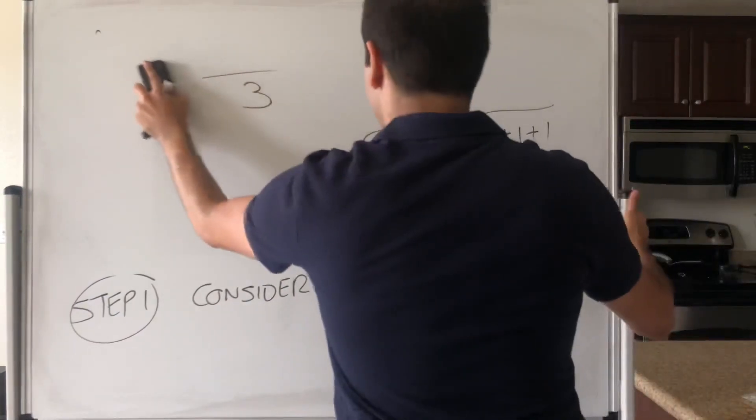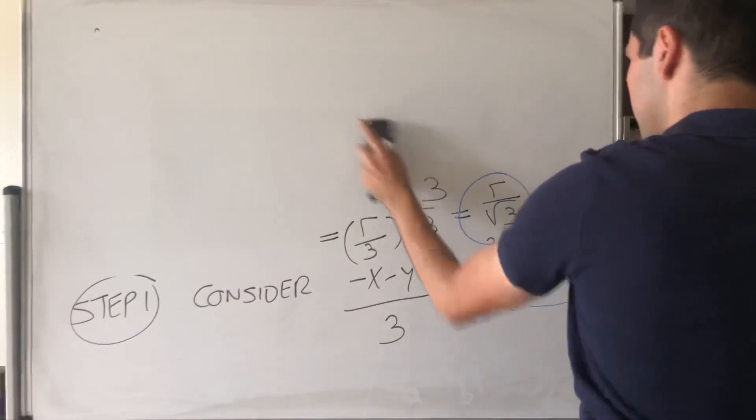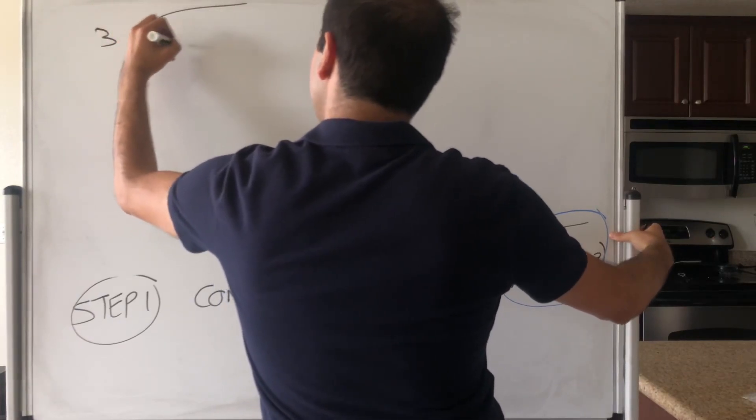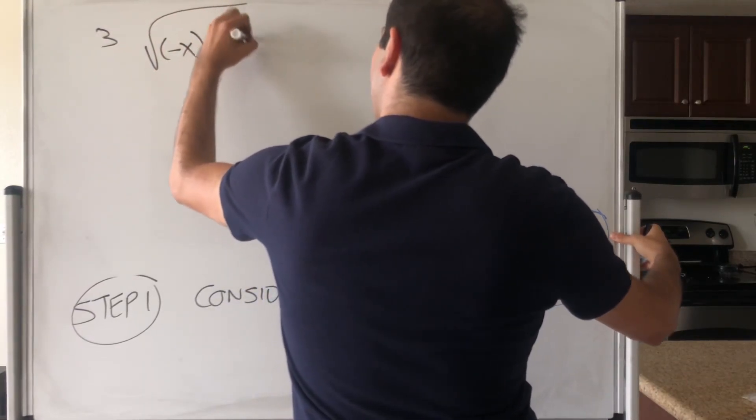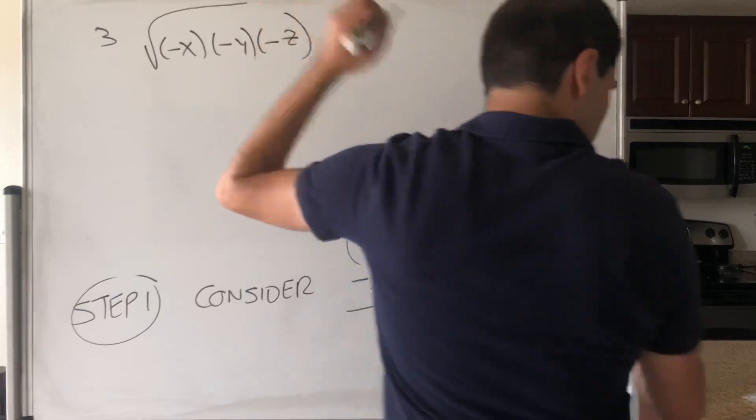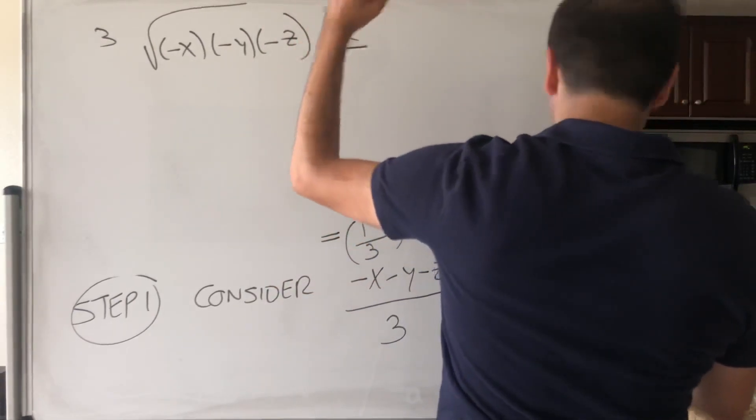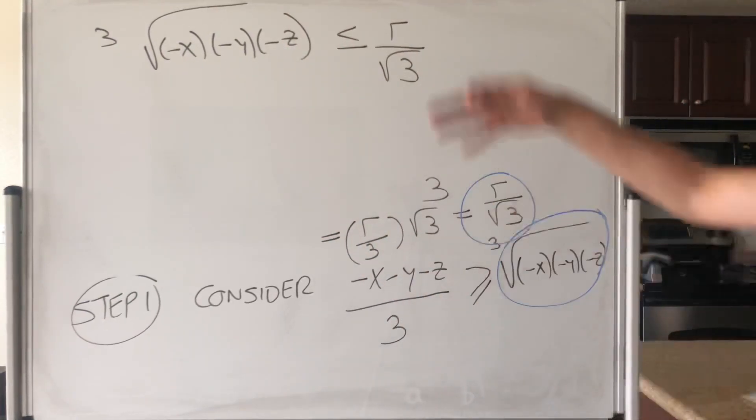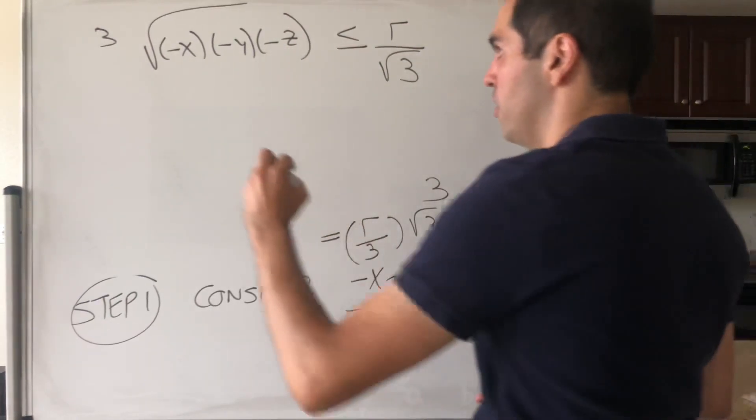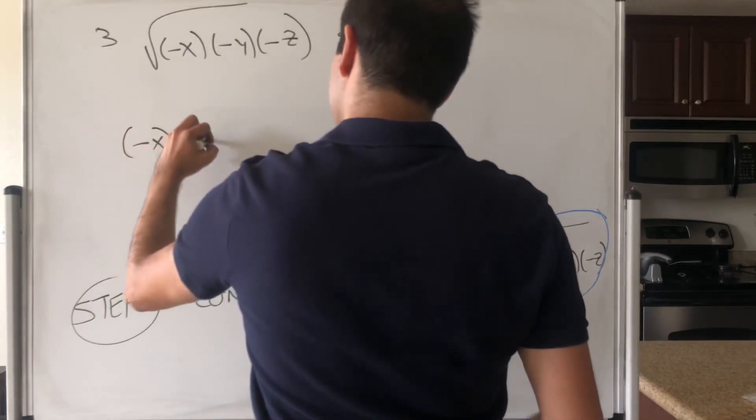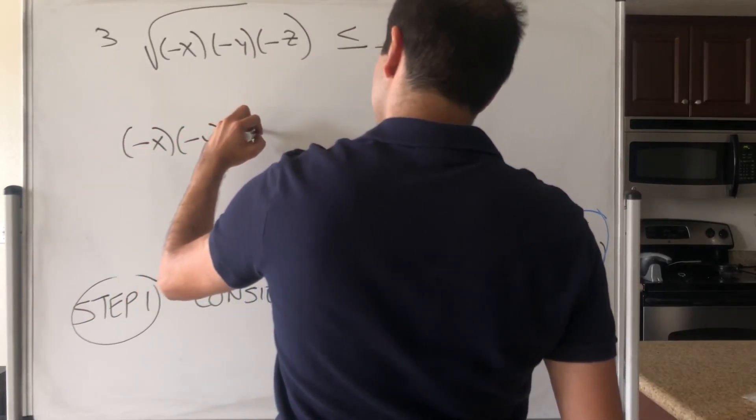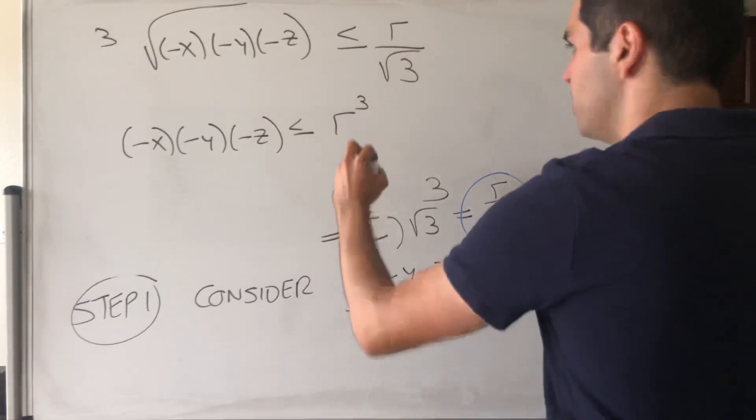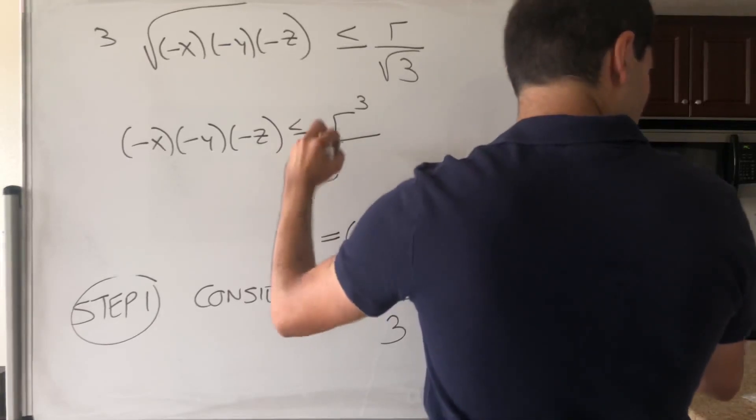So, to summarize, the cube root of minus x minus y minus z is less than or equal to r over square root of 3. Which means now, we can just cube all sides, and we get minus x times minus y times minus z is less than or equal to r cubed, square root of 3 cubed, which is just 3 square root of 3.